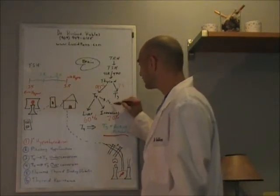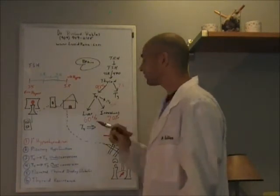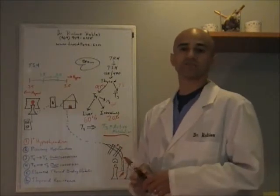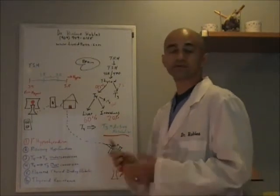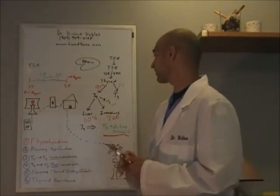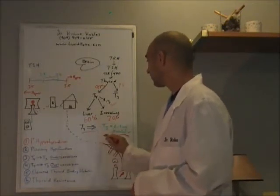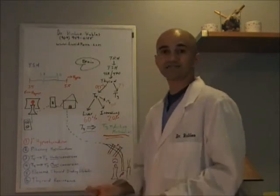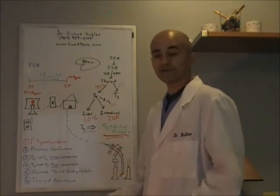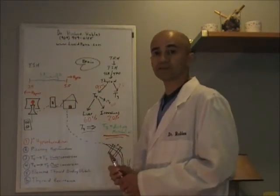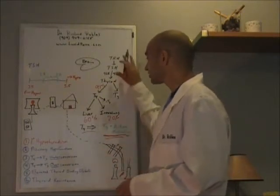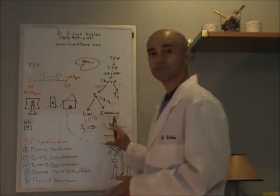And the remaining 20% of your T4 is going to be turned into something called reverse T3. Which is a feedback mechanism to let the thyroid know that it's doing things correctly. So the goal here is to turn this T4 into T3, the active thyroid hormone, to have an effect on your metabolism to increase the energy in your body. When everything is working right in your body, this is what happens.